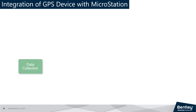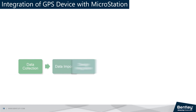Once data collection is done, the collected GPS data can be imported into MicroStation in various formats including text files, spreadsheets, or proprietary GPS data formats. Once importing is done, it can be used to accurately position design elements in a MicroStation project.